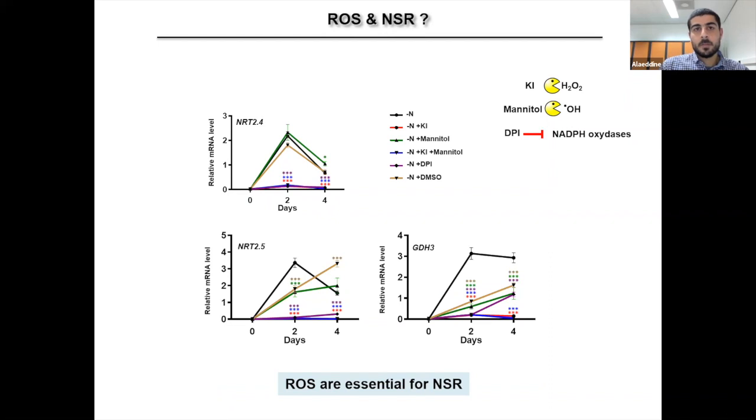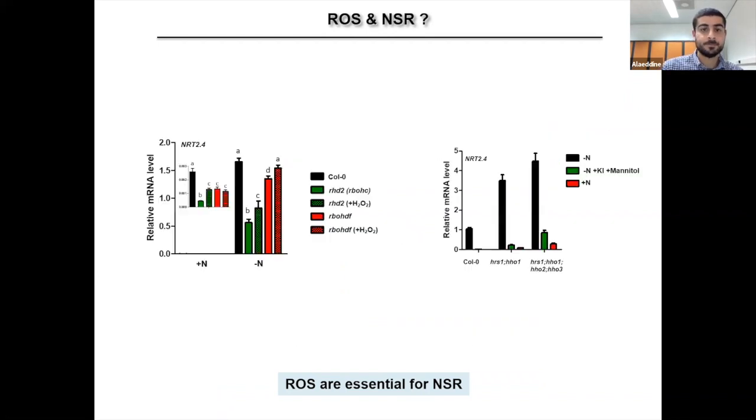This is also true for other NSR markers, proving that ROS scavengers are powerful NSR inhibitors. In another experiment, we applied either an individual or combined treatment of potassium iodide and mannitol, but also DPI, which is an NADPH oxidase inhibitor. And all the treatments have negative effects on the upregulation of NSR marker genes. In this graph on the left, we show that nitrogen starvation response is highly affected in NADPH oxidase mutants and that H2O2 treatment in red can attenuate this phenotype in minus N conditions.